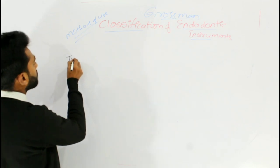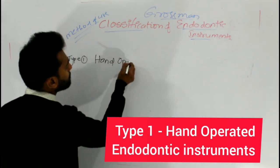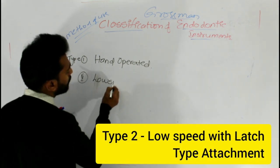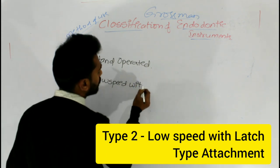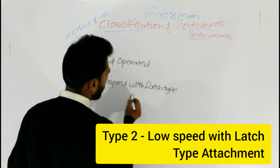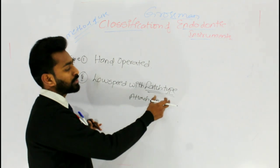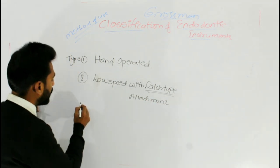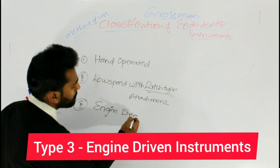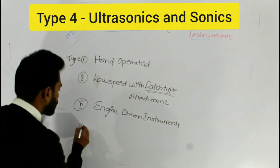Type 1 includes hand-operated endodontic instruments. Type 2 includes low-speed with latch-type attachment, meaning you need to attach these instruments to a micromotor handpiece. Type 3 is engine-driven instruments. The fourth one is ultrasonics and sonics.